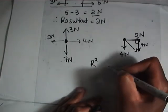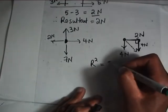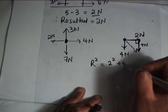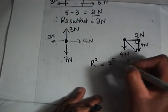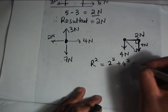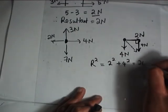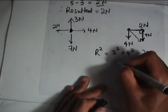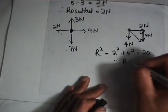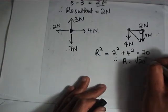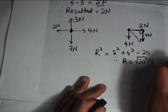Resultant squared is equal to 2 squared plus 4 squared. 2 squared is 4, and 4 squared is 16, so this gives us 20. Therefore our resultant force is root 20 newtons.